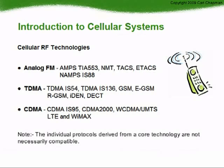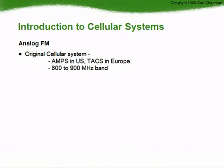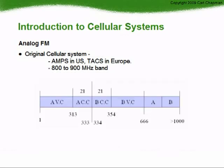The individual protocols derived from a core technology are not necessarily compatible — for example, a GSM phone will not work on an IS-54 system. All original cellular telephone systems used analog FM transmissions in the 800–900 MHz band. The AMPS system was split to allow for two cellular operators, A and B, and originally had 666 channels. As it became more popular, this was expanded to 832 channels, consisting of 42 analog control channels — 21 for system A and 21 for system B — and 790 analog voice channels — 395 for each system. Most modern systems now use up to 1024 channels.